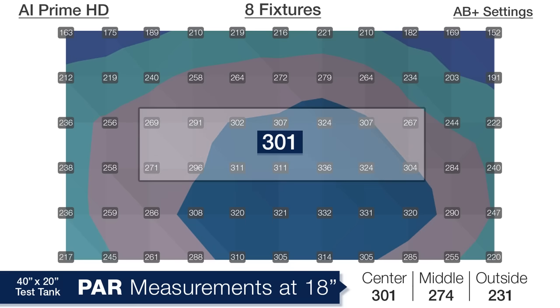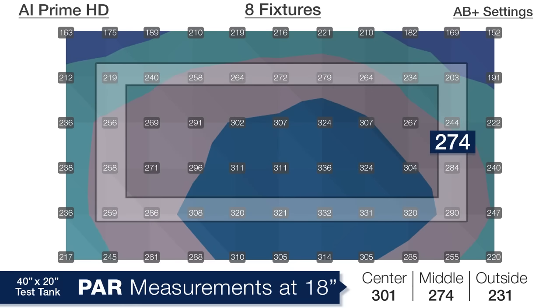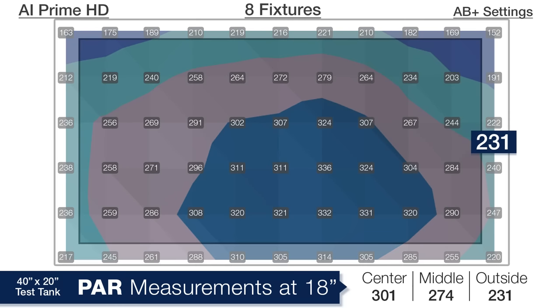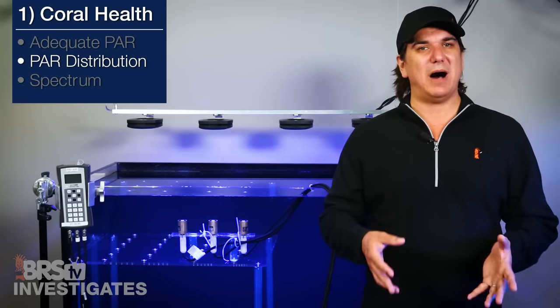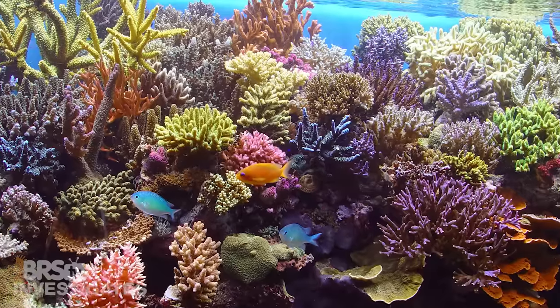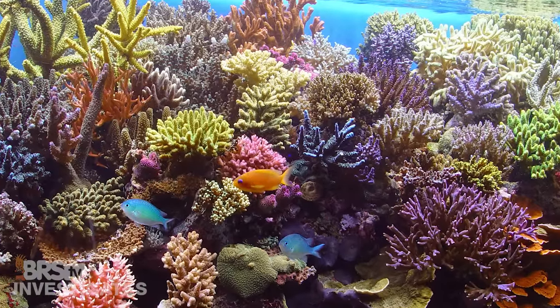At the bottom of the tank we are seeing 301 in the center, 274 in the middle ring, and 231 in the outside edges of the bottom of the tank. I have to say this is approaching near ideal performance for the modular format and a really solid solution for a wall to wall SPS tank.